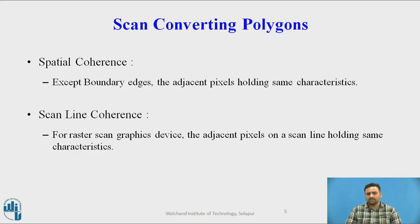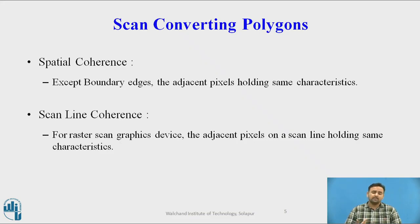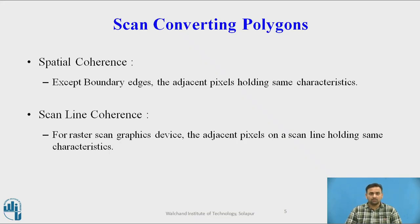Scanline coherence means that for a raster scanning graphics device, if adjacent pixels on the scanline hold the same property — in other words, the same color — then the simplest method is to directly draw a line from the starting point to the end point using the line function, which reduces our work. Spatial coherence and scanline coherence are the two major concepts in scan converting polygons.